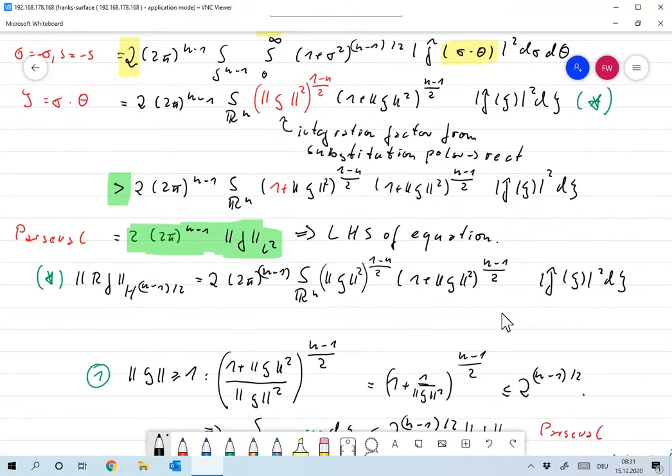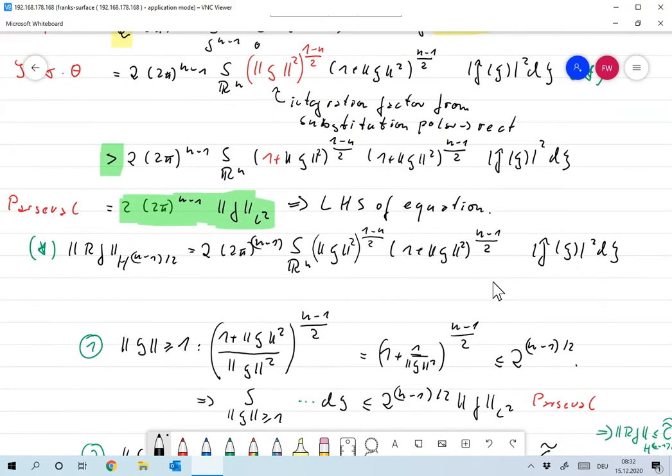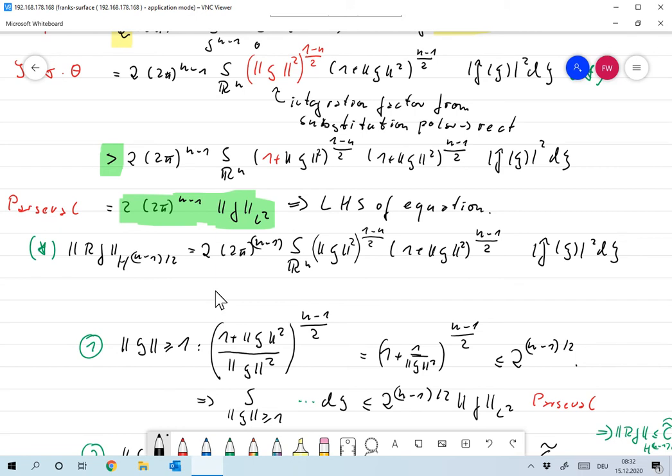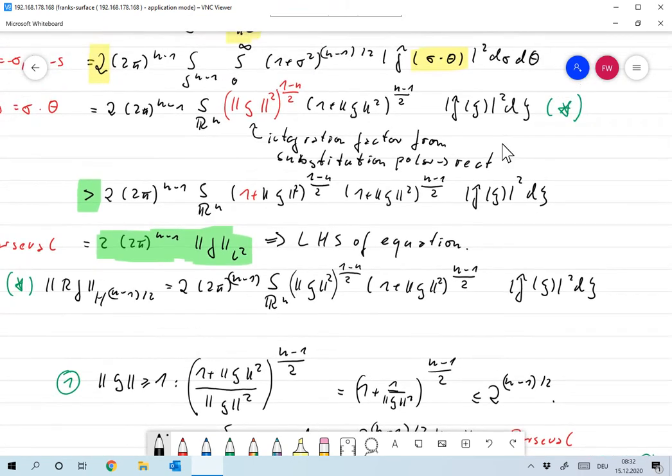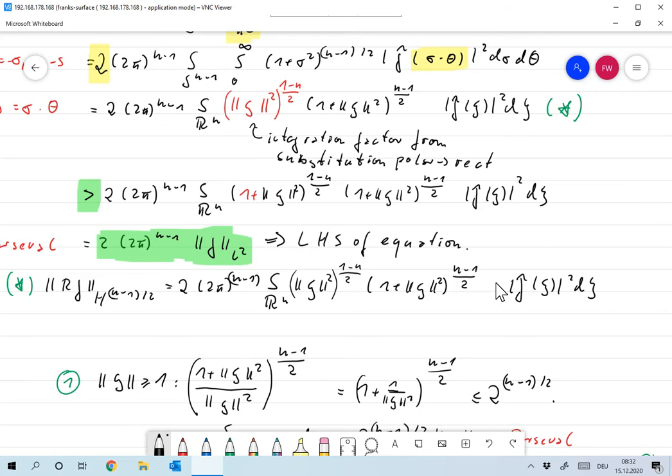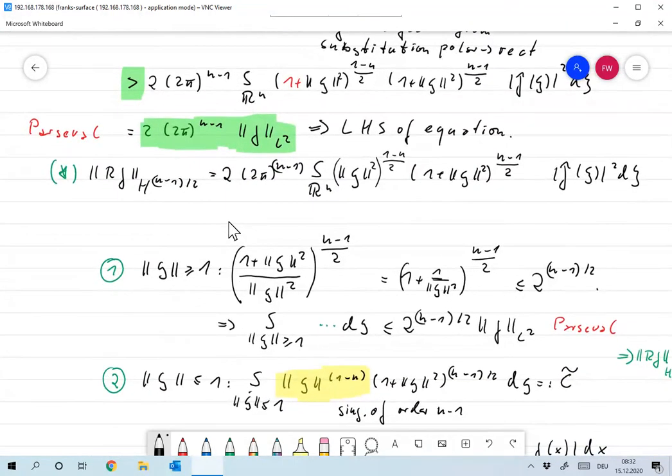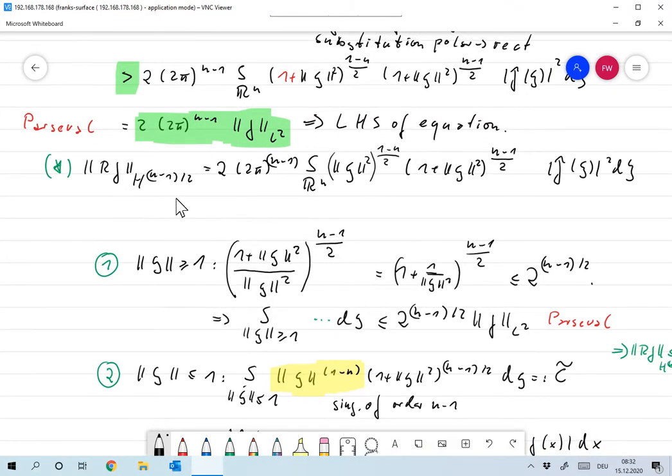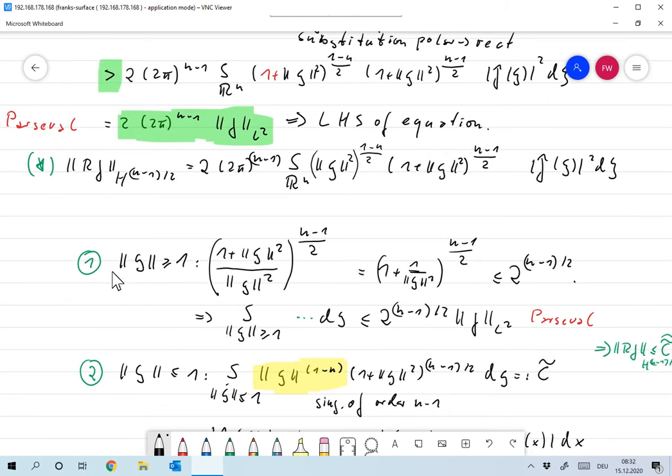Okay, for the right-hand side, so for the second inequality, let's again start out from star, and I hope that this is exactly what is up here. Yes, I just wrote it again. And this time let's split the integral over R^n, which we have over here, in one part where the norm of psi is larger or equal to 1, and one part where the norm of psi is smaller or equal to 1. Now first thing, let's go for...